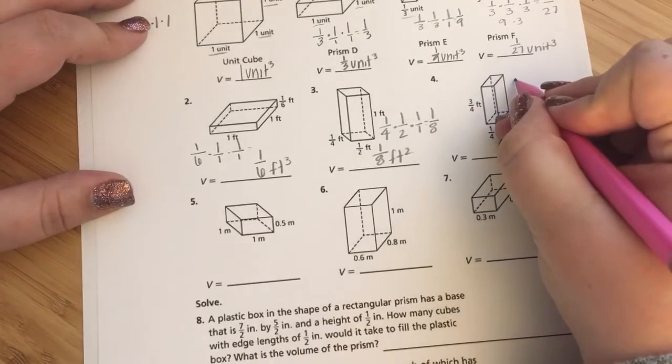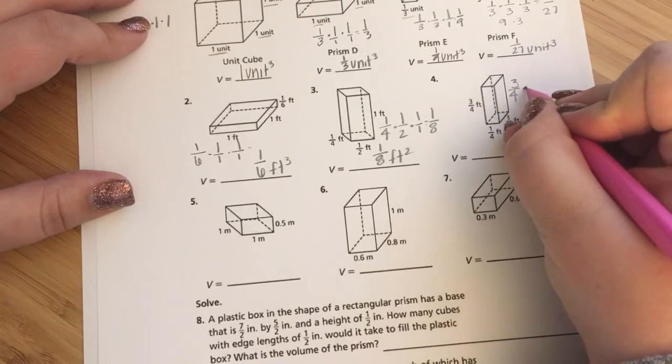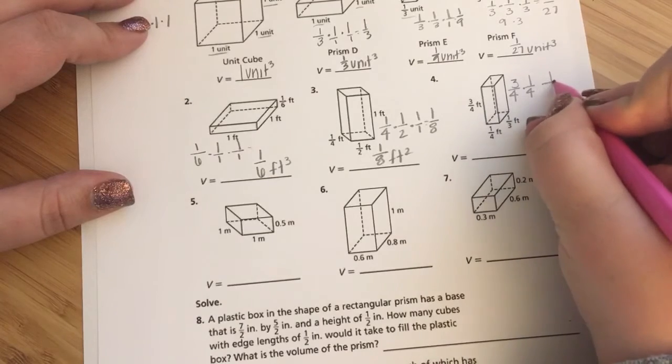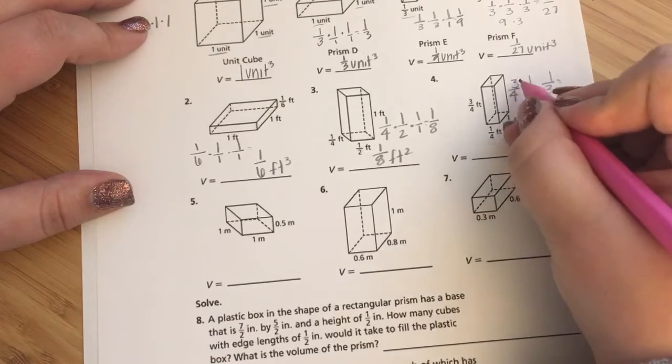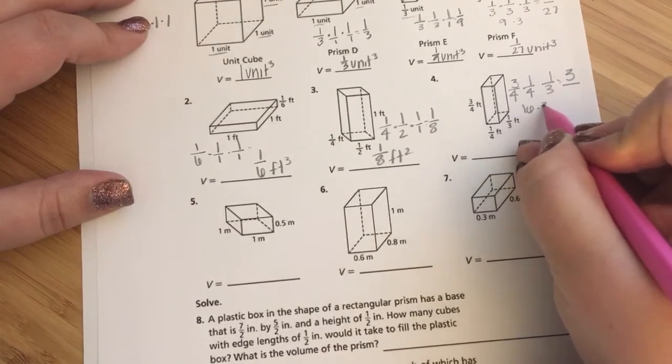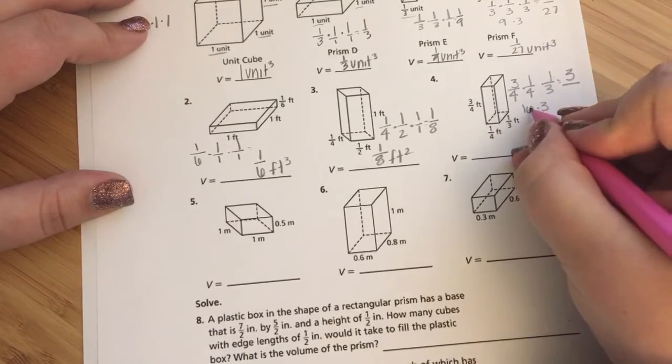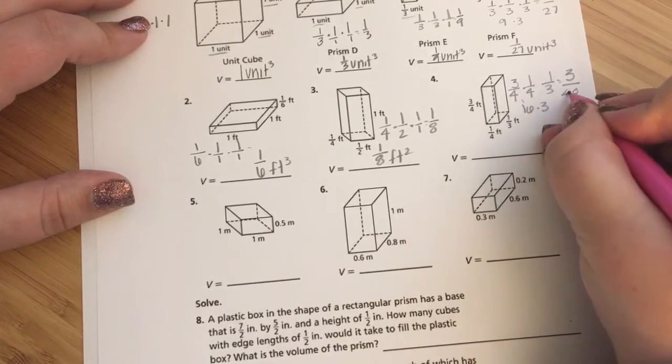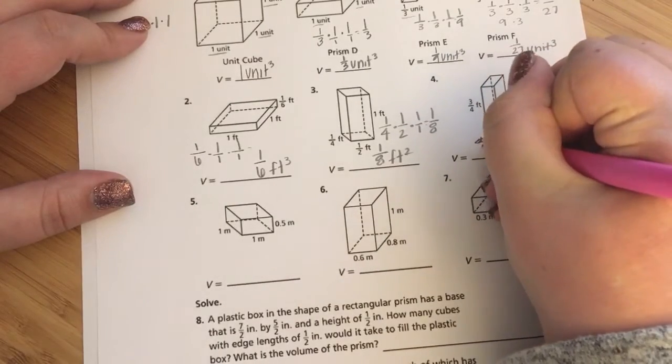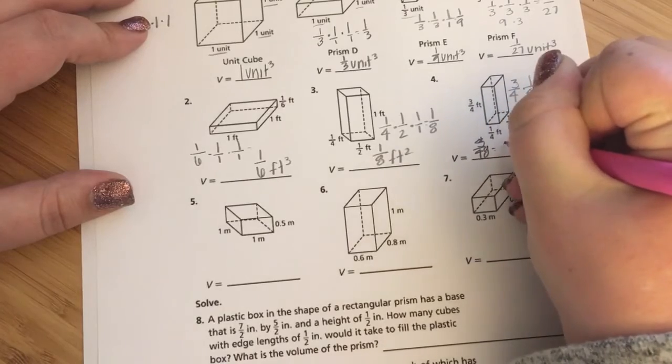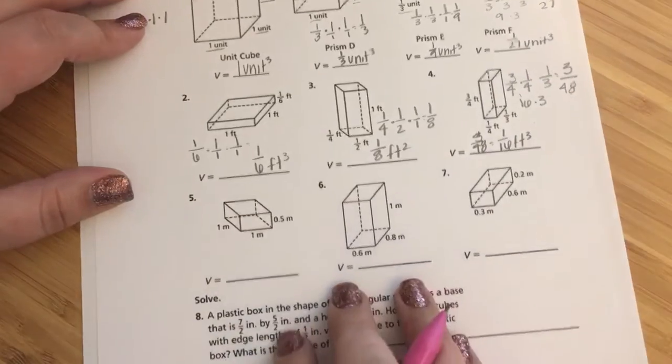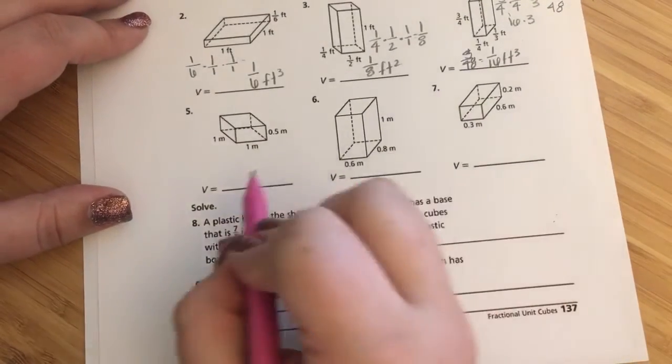3 fourths times 1 fourth times 1 third. So, 3 fourths multiplied by 1 fourth gives me 3 16ths. Multiply that by 1 third, I would have 3 16ths times 3, carry the 1. So, 48, 3 48ths. And actually, this could be taken down to 1 and 1 16th feet cubed, knowing that 3 is the biggest number that goes into 3 and 48.